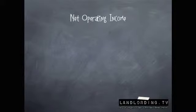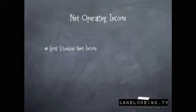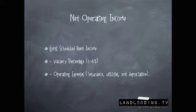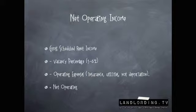What is net operating income? Net operating income is your gross scheduled rent income — that's just your plan because you obviously won't know what it is — minus your vacancy percentage on that rent income, which is typically three to six percent, minus your operating expenses only, which is going to be your insurance, utilities, and things like that, not depreciation or income taxes or anything like that. And that is how you get your net operating income.